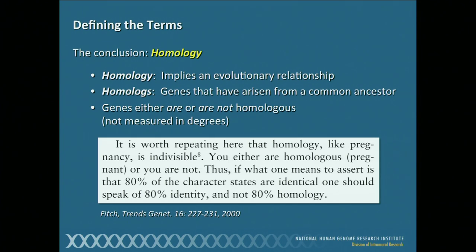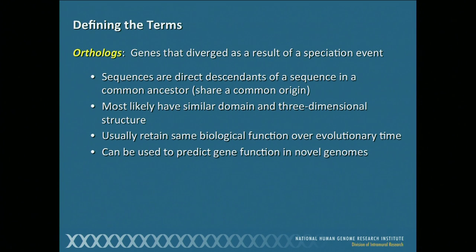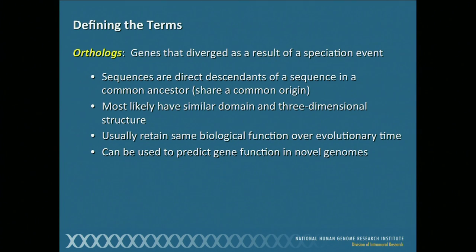Just to make things more complicated, the term 'homolog' might actually describe several different types of evolutionary relationships, and we're going to focus specifically on two of them. The first is called orthologs — genes that have diverged as a result of a speciation event. Simply put, you can think of orthologs as the same gene in different species. Because of that, they're direct descendants of a sequence in a common ancestor, they most likely have similar domain and three-dimensional structure, usually retain the same biological function over time, and can be used to predict gene function in novel genomes.